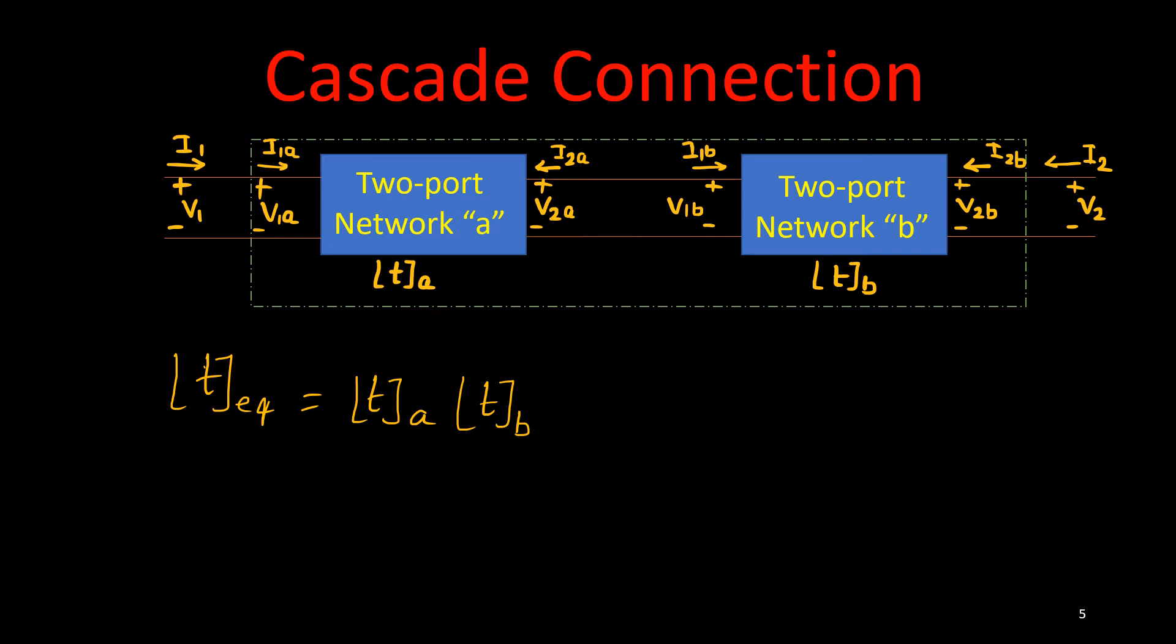If it is more than two networks, if there are N networks then we can extend this property as, first one is T-1 then T-2 then T-3, all are multiplication form up to T-N. If there are N such two port networks are connected in cascading one after another, then equivalent T network would be just multiplication of all those T parameters.